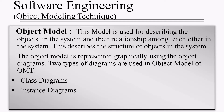In this lecture, we will discuss the object model in detail. This model is used for describing the objects in the system and their relationships among each other, describing the structure of objects. The object model is represented graphically using object diagrams. There are two types of diagrams used in the object model of OMT: class diagrams and instance diagrams.